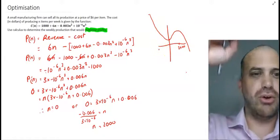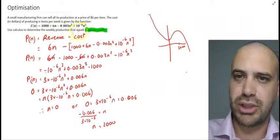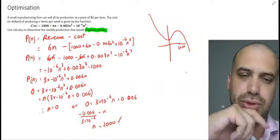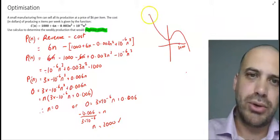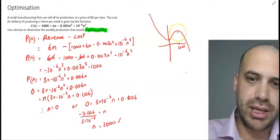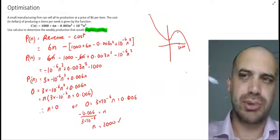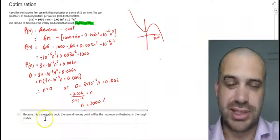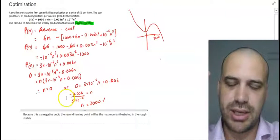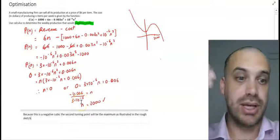Now I don't know how high or low this is. I'm not being asked though, because it says use calculus to determine the weekly production that would maximize profits. The weekly production that would maximize profits is 2000. I believe because of the fact that this is a negative cubic, therefore the second turning point is going to be the maximum. But I could explain that. I could explain that using this sentence, but it's a bit clunky. Instead, I should probably just test the turning points to find out which one's the minimum and which one's the maximum, using the second derivative test.